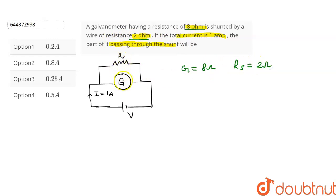We can see that RS and G are connected in parallel. So, the total equivalent resistance of this circuit, let it be R, it will be calculated as 1 upon R is equal to 1 upon G plus 1 upon RS. This will give us 1 upon R is equal to 1 upon 8 plus 1 upon 2. After simplifying, we get R is equal to 1.6 ohms.